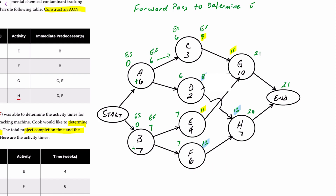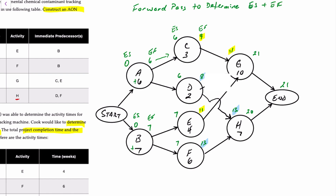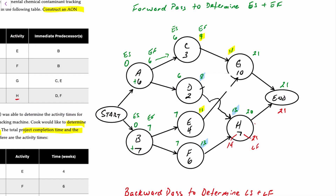That's the forward pass, used to determine the earliest start and earliest finish times. We're also asked to determine the latest start and latest finish, and for that we use a backward pass, working backwards through the diagram. The latest finish time for the project is 21 weeks. Because the last activities are G and H, the latest that H can be completed is 21 weeks; 21 minus seven gives us 14 weeks. So 21 is the latest finish and 14 is the latest start for activity H.